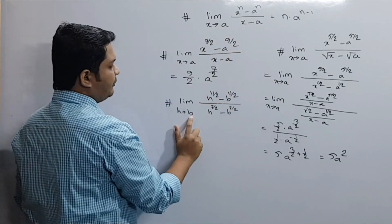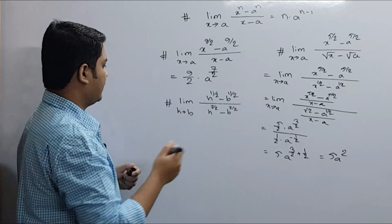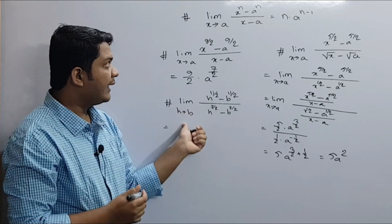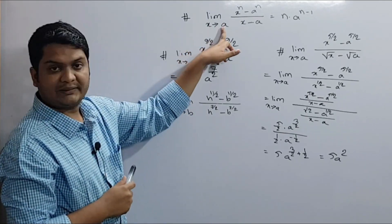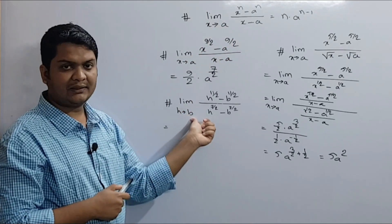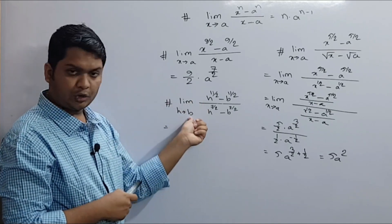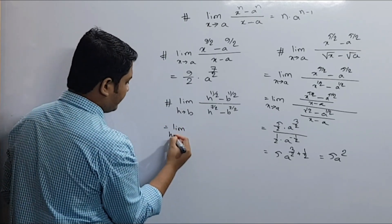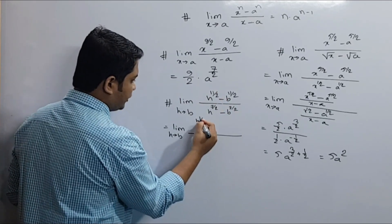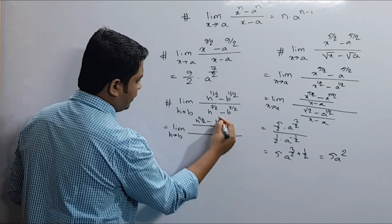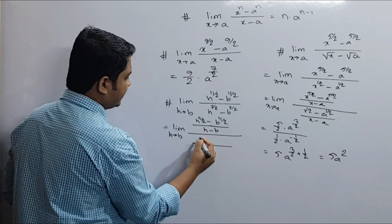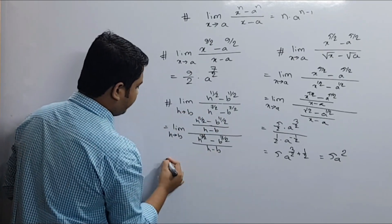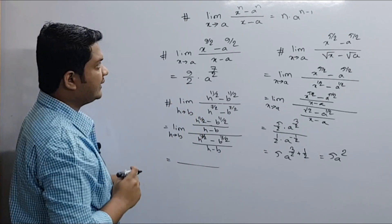With variable b, n minus 1 gives the same answer b minus 1. Then another case: as x tends to b, h minus b. The limit tends to b. I'm going to compute b to the 11 by 2 minus b to the 11 by 2, out of 7 by 2, minus b to the 7 by 2.